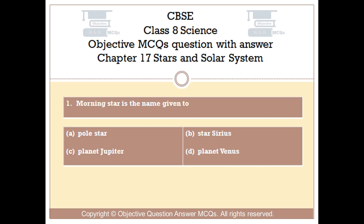Question number 1. Morning Star is the name given to. Option A: Pole Star. Option B: Star Sirius. Option C: Planet Jupiter. Option D: Planet Venus.